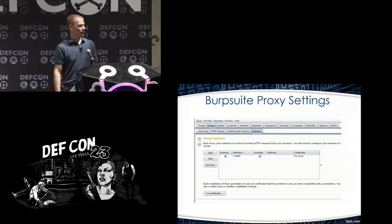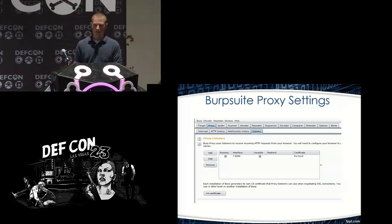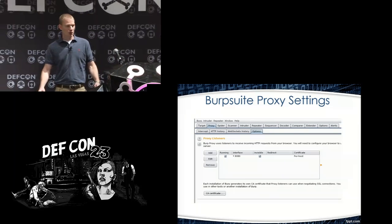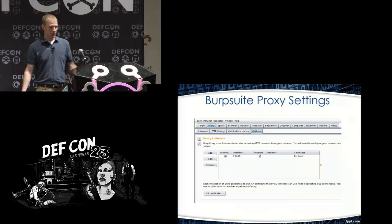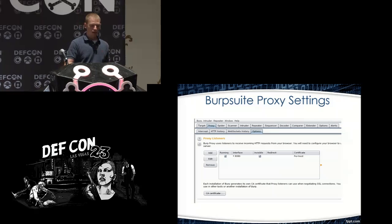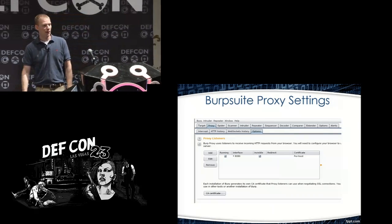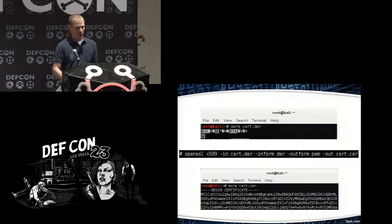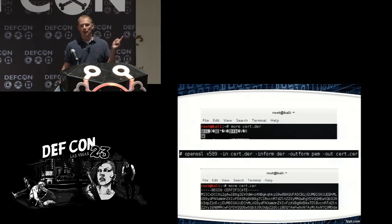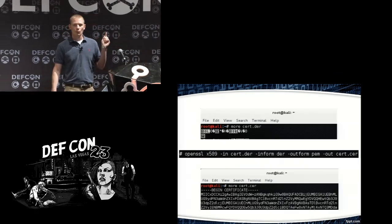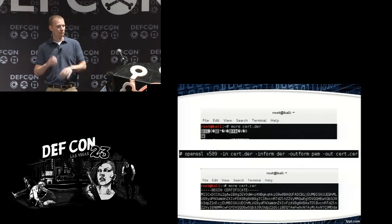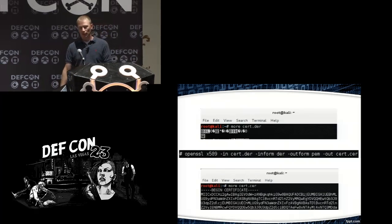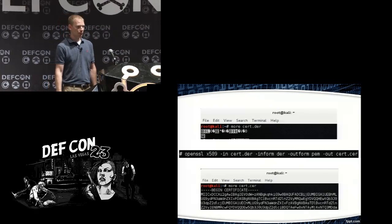For those not familiar with Burp Suite — it's configured here listening on all interfaces on port 8080 with invisible/transparent proxy mode checked. You export the certificate via the CA certificate button. The certificate comes out in DER format, which contains characters I can't type by keyboard, so I convert it using OpenSSL from DER to PEM base64 encoding. Done correctly, it becomes human-readable — all letters and numbers — something the Ducky can type easily.